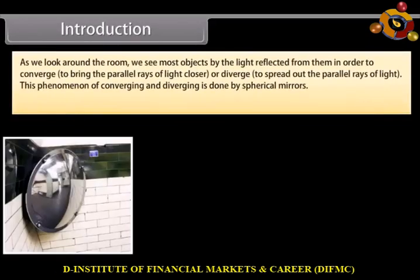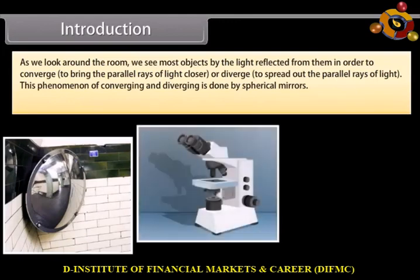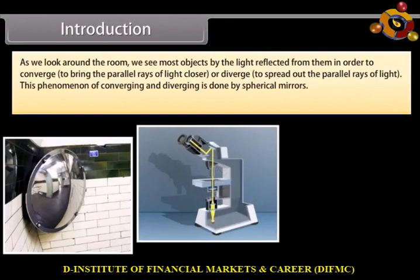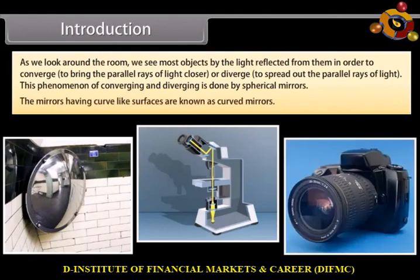As we look around the room, we see most objects by the light reflected from them. In order to converge — to bring the parallel rays of light closer — or diverge — to spread out the parallel rays of light — this phenomenon of converging and diverging is done by spherical mirrors. The mirrors having curve-like surfaces are known as curved mirrors.